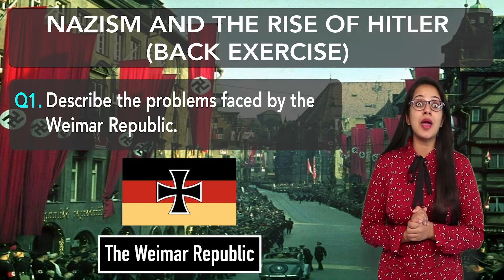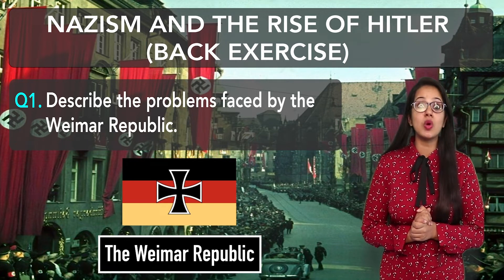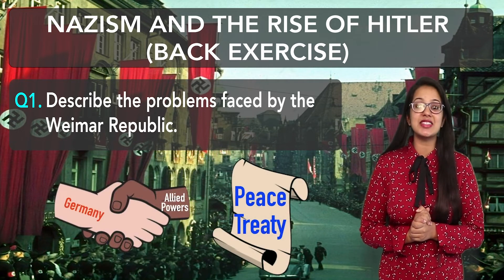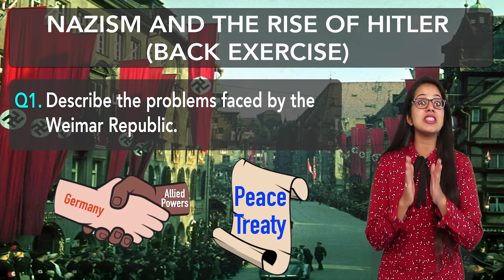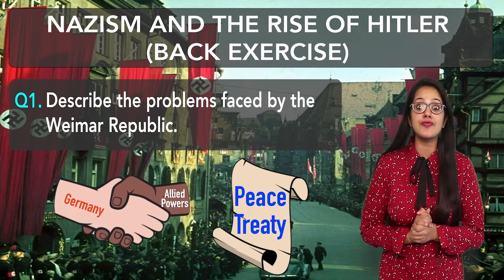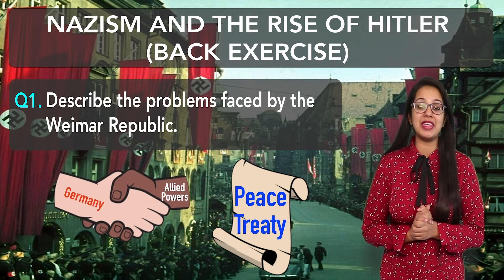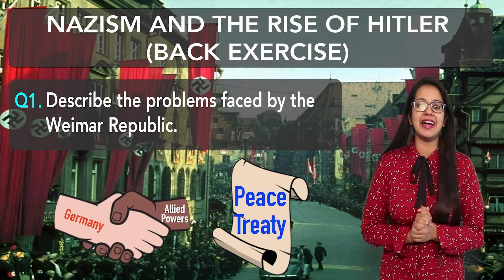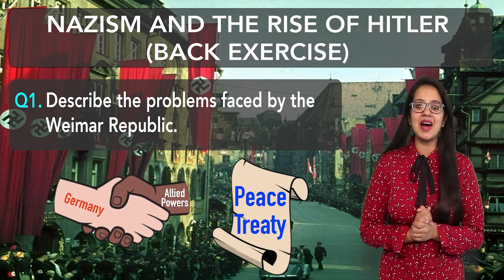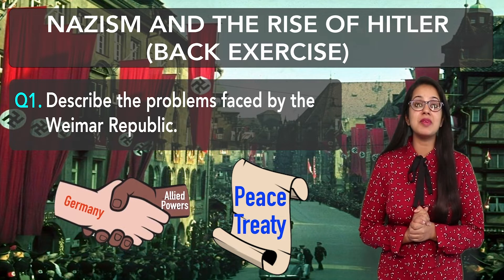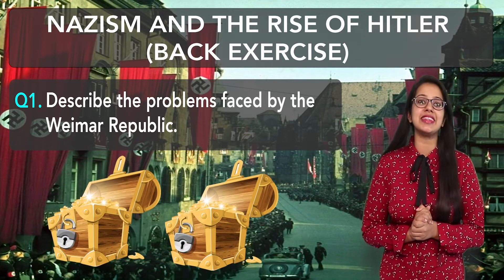The Germans had never accepted the Weimar Republic. There were many reasons. In World War I, Germany had a peace treaty with the Allied powers. Germany had to give the Allied powers 6 billion pounds. Under such harsh terms, the Weimar Republic had accepted the peace treaty. Therefore, Germans had never liked the Weimar Republic.